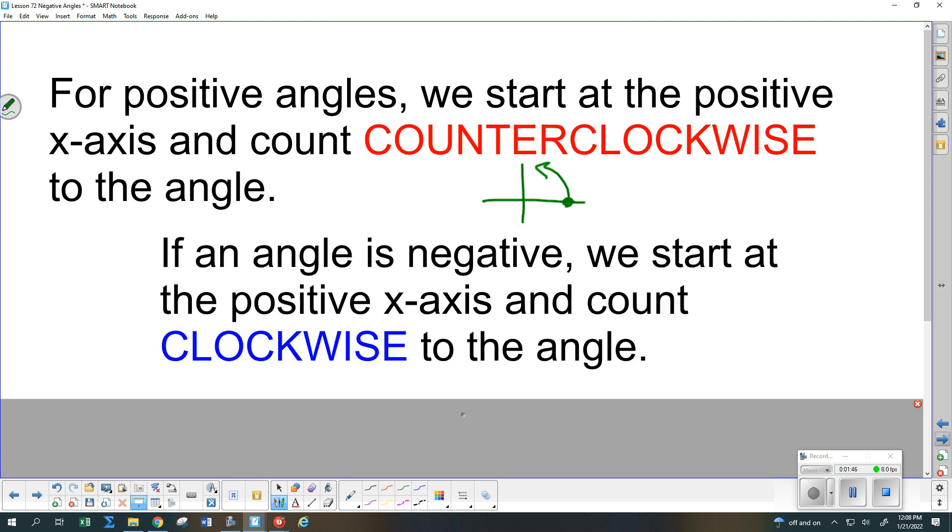If we want to talk about a negative angle, we still start at the same place. Just like on the number line, we started at zero whether we were going positive or negative. Start at the same place. But now we go exactly the opposite direction. We go down and around. And that's all that a minus sign in front of an angle means. And that way is called clockwise because that's the same direction that the hands on the clock turn.